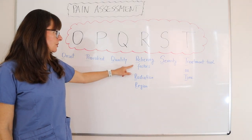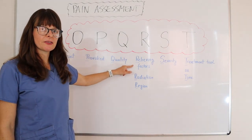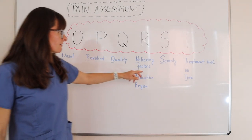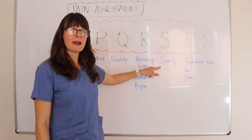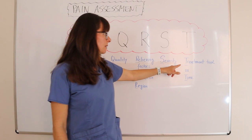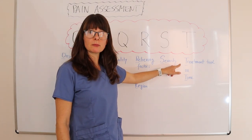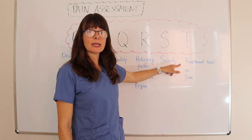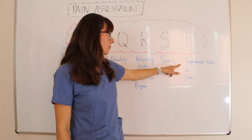Relieving factors are none — nothing has helped the pain. The severity is currently a 5 out of 10, and the treatment tried includes Tums over the counter, which didn't really help the pain at all.